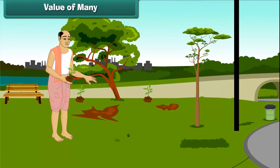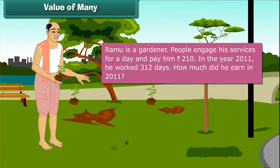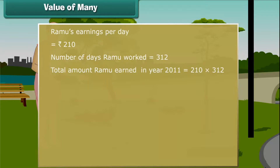Value of Many. Ramu is a gardener. People engage his services and pay him 210 rupees for a day. In the year 2011, he worked for 312 days. How much did he earn in 2011? Ramu's earnings per day is 210 rupees. Number of days Ramu worked is 312. Total amount Ramu earned in 2011 is 210 multiplied by 312.